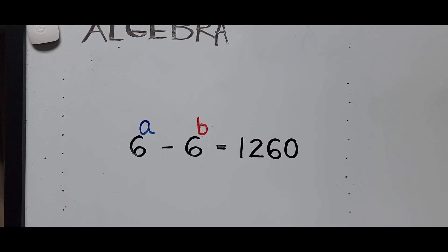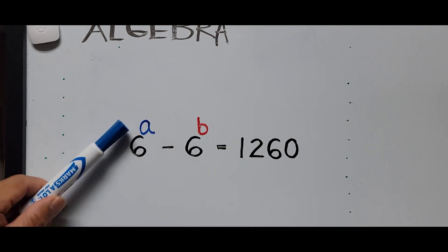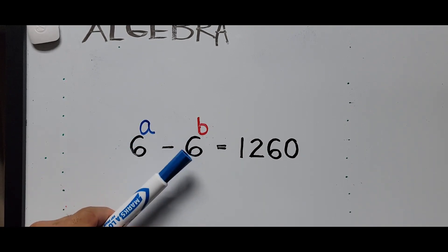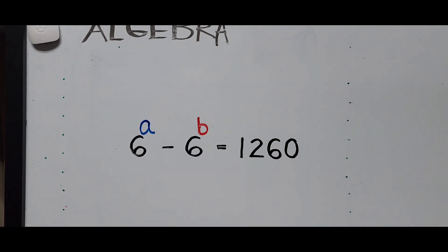Welcome to Cassiano Easy Math. Today's video is about solving another exponential equation. We have 6 to the power A minus 6 to the power B equals 1260, and in this video I will be presenting two ways to solve this exponential equation.